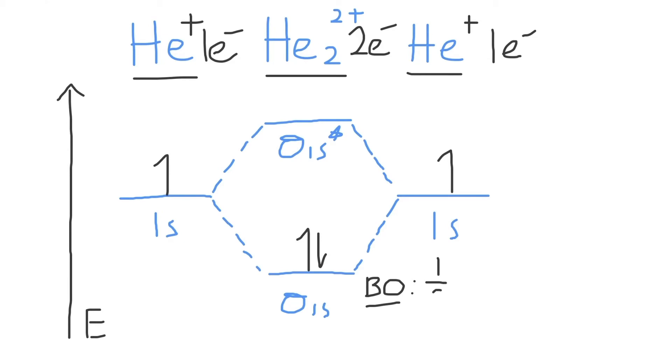And it is equal to one-half the number of bonding electrons, which are found in the sigma 1s molecular orbital, minus the number of antibonding electrons, which are found in the sigma 1s star antibonding molecular orbital.